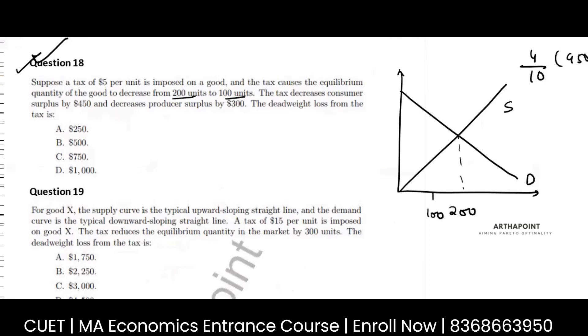The tax decreases consumer surplus by 450. Now this area is given to this area. This part is given to me. This area. This is given to me as 450.